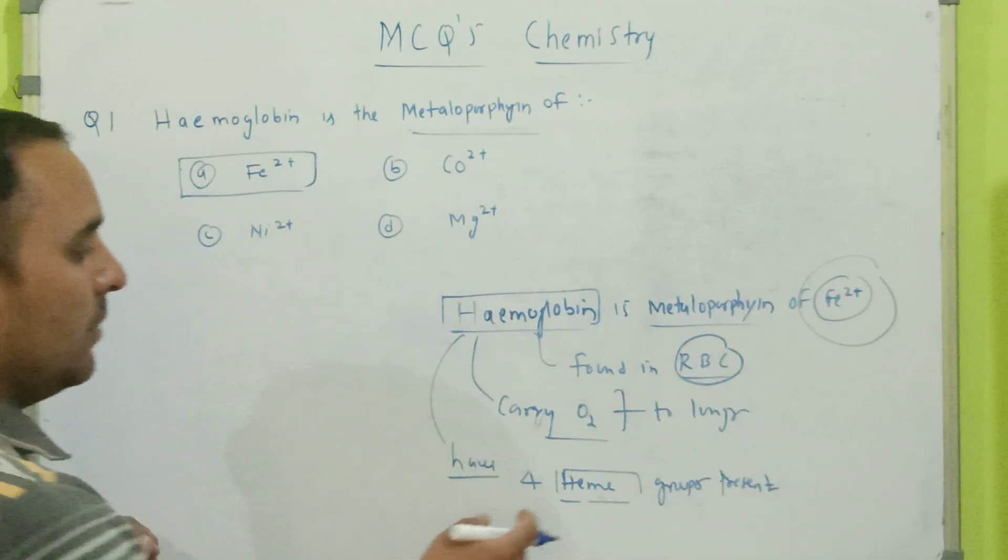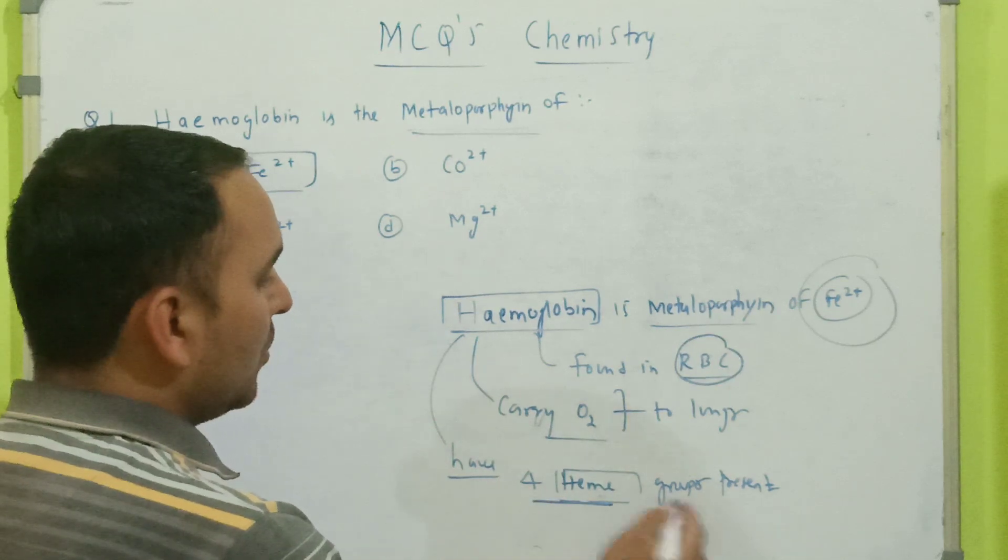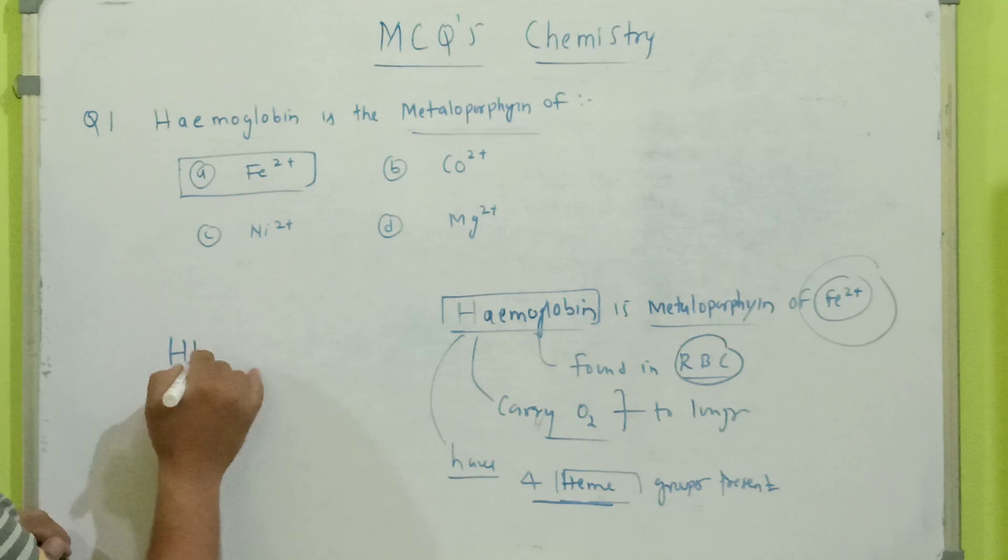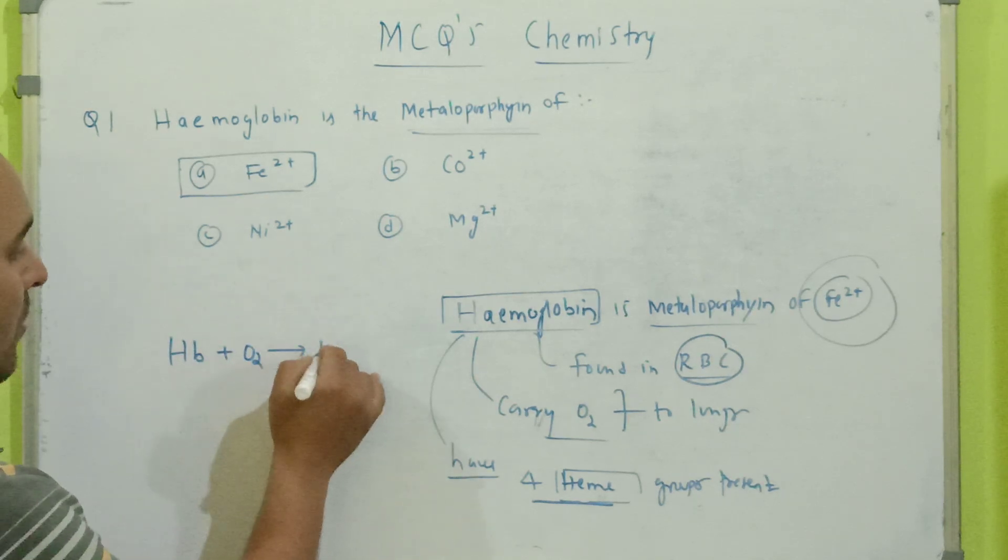Hemoglobin has the presence of four heme groups, and we will also know that when hemoglobin combines with oxygen, it forms oxyhemoglobin.